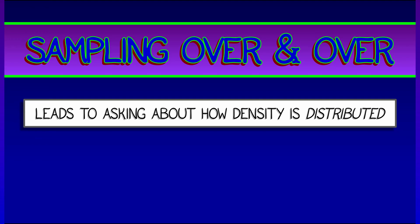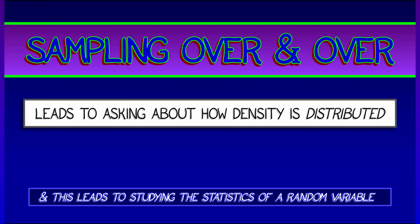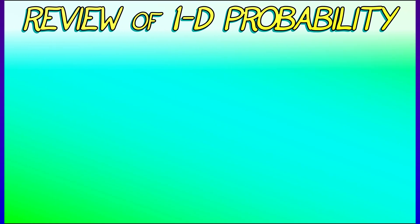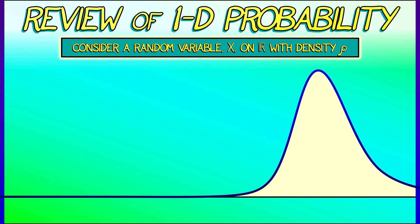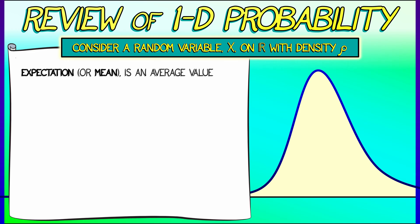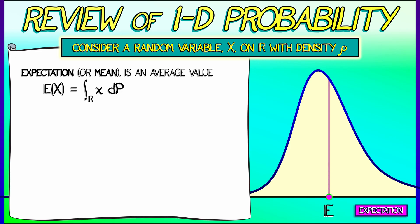If we take a random variable, sample it over and over, and see what tends to happen, this leads to certain quantities that characterize the statistics of a random variable — things like mean or standard deviation. The mean, or expectation E(x), is an average value: it is the integral over the entire reals of x dP, that is, the integral of x times rho(x)dx. This mean tells you where you're likely to be if you sample this random variable over and over. This may or may not occur where the probability density is highest.